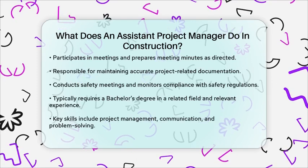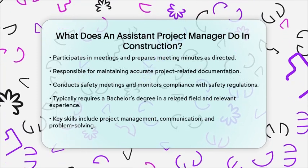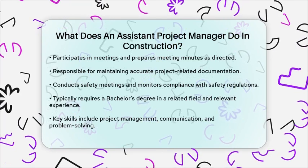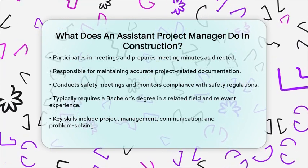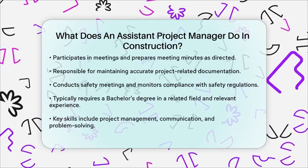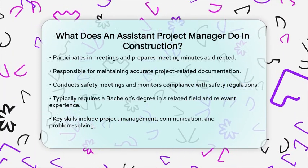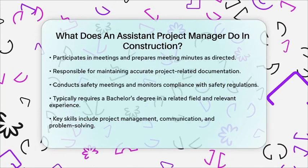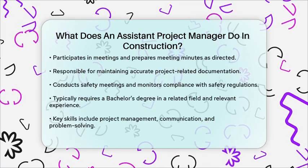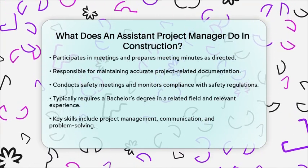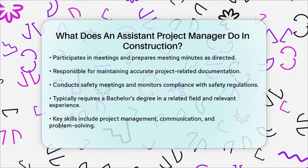To excel in this role, an assistant project manager typically needs a bachelor's degree in construction management, civil engineering, architecture, or a related field, along with relevant experience in the construction industry. Key skills include project management, effective communication, problem solving, and familiarity with construction software and tools.